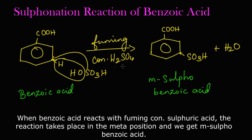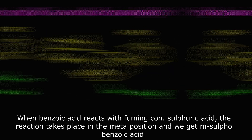To summarize: when benzoic acid reacts with fuming concentrated sulfuric acid, the reaction takes place at the meta position. The hydrogen from the meta position and the OH from sulfuric acid are eliminated as a water molecule, and the SO₃H group replaces the hydrogen at the meta position, giving meta-sulfobenzoic acid as the product.